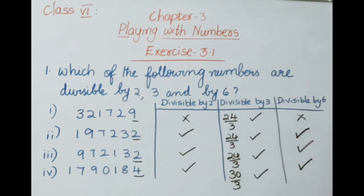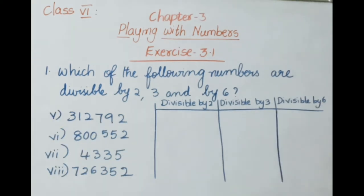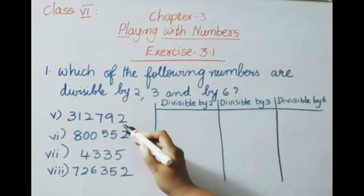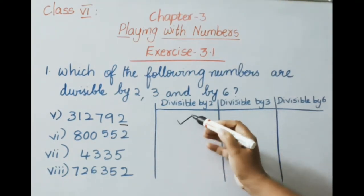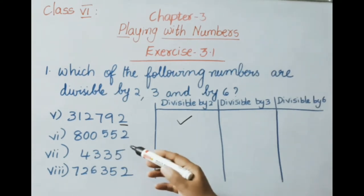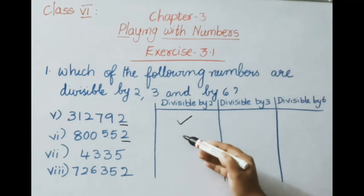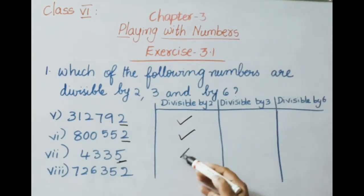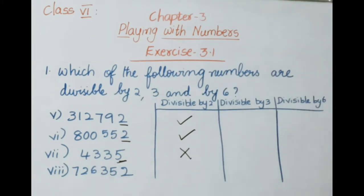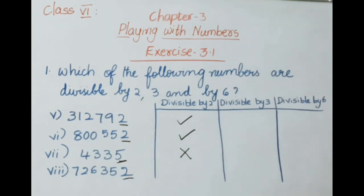Now let us see the continuation of this question. Checking divisibility by 2 for the next four numbers. 3,12,792 has 2 in ones place — divisible by 2. 8,552 has 2 in ones place — divisible by 2. 4,335 has 5 in ones place — not divisible by 2. 7,26,352 has 2 in ones place — divisible by 2.